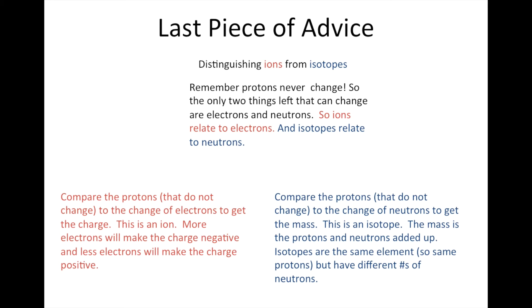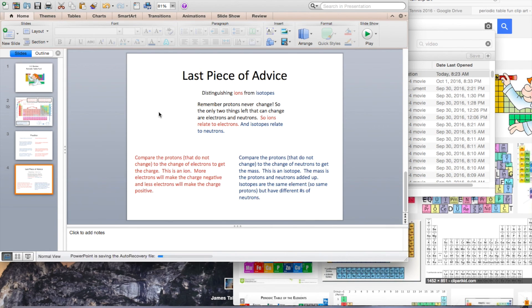So ions relate to electrons because that's the charge, and isotopes relate to neutrons because that's the mass. So on the left in red, when it's an ion, you compare the protons to the electrons. On the right, you compare the protons to the neutrons of its mass. So an ion is when you lose or gain electrons. The more electrons you gain, the more negative, and the less electrons or the more electrons you lose, the charge would be positive. And on the right, if you are gaining neutron or just the neutrons will randomly change, that's an isotope. An isotope is the same element that has the same protons because it's the same element, but different amounts of neutrons. So that atomic mass has a decimal because there are different masses out there of that element. So try that out. See if that helps out a lot. Hopefully that will make that a little bit easier to understand.